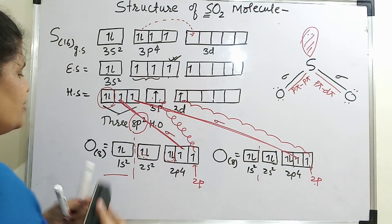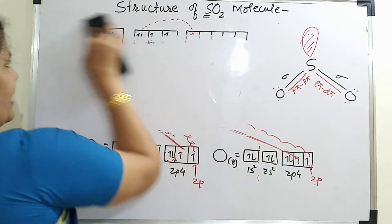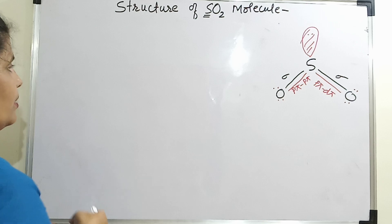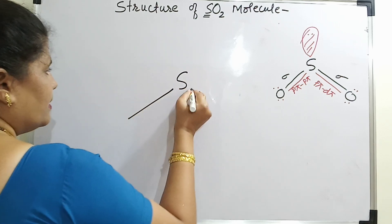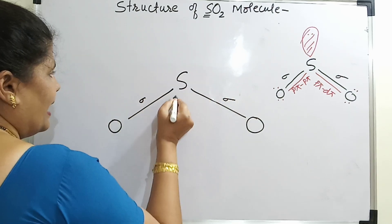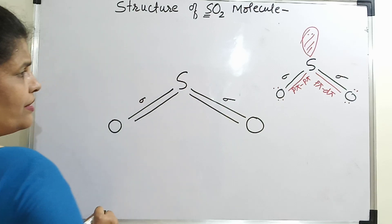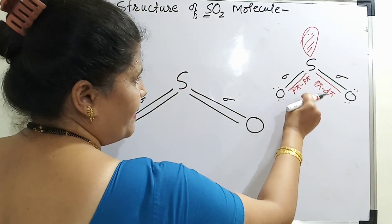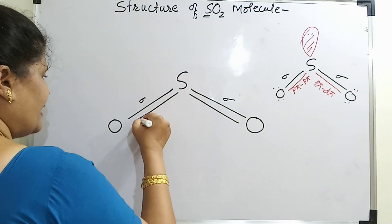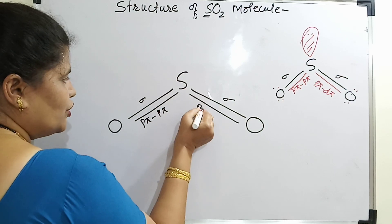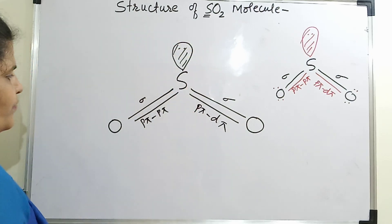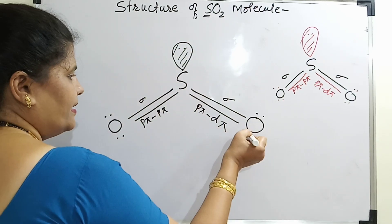Let us draw the structure and study the geometry and the bond angle for SO2. The structure for SO2 will have sulfur as central atom with the first oxygen and second oxygen connected by sigma bonds, and then pi bonds are formed. It is not necessary that one side should have p-pi, p-pi — it can be p-pi, d-pi on one side and p-pi, p-pi on the other. So let us write p-pi and p-pi on one side and p-pi, d-pi on the other. This is the lone pair on sulfur — two lone pairs.